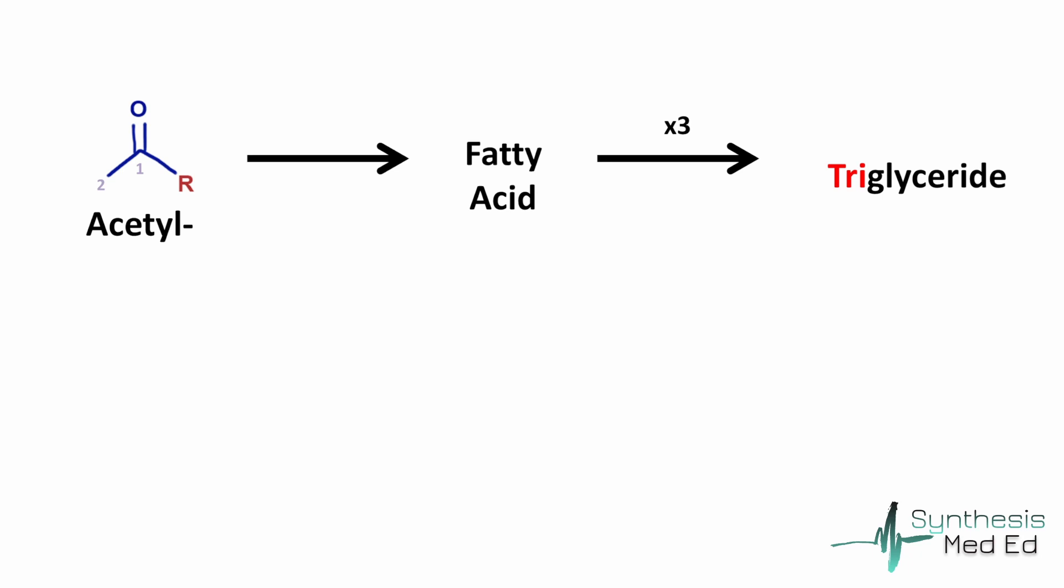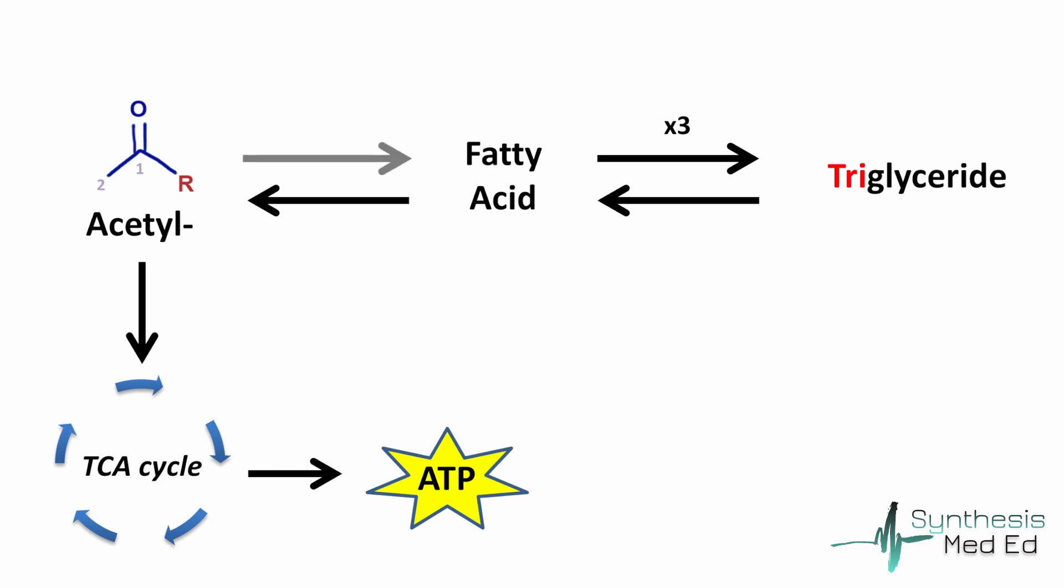Then later, when the fuel is needed for use, we do the opposite processes, freeing up the acetyl groups and feeding them into the TCA cycle to make ATP and get energy. The process of packaging acetyl groups into fatty acids is known as fatty acid synthesis, and the process of breaking the fatty acids back down into acetyl groups is known as beta-oxidation.